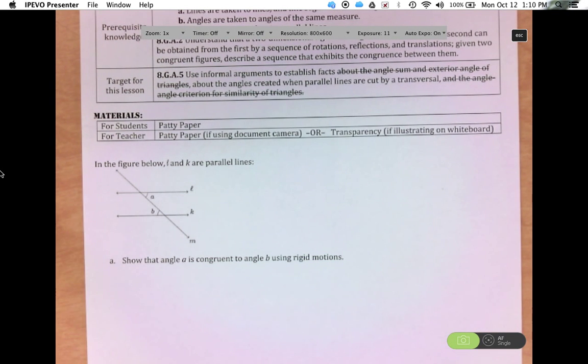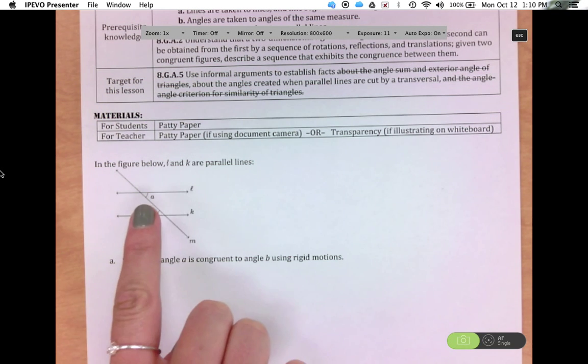So you're given this figure below. So you have L and K are parallel lines. You have two angles marked, so A and B. And the first question is show that angle A is congruent to angle B using rigid motions.